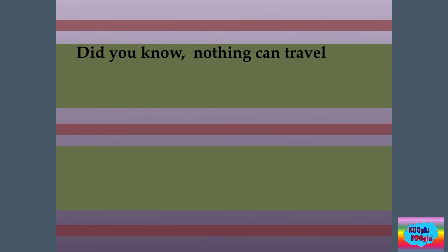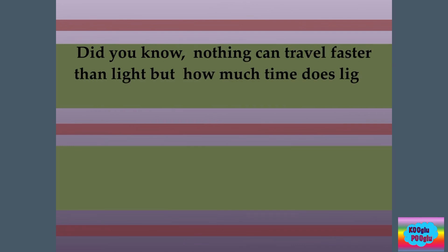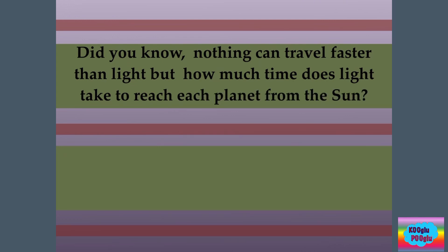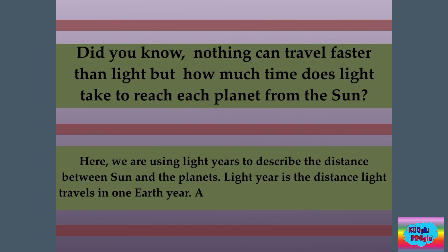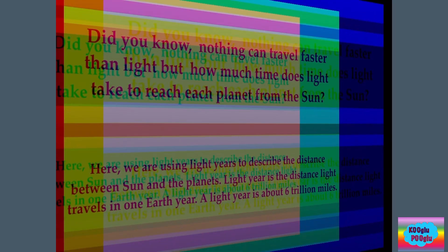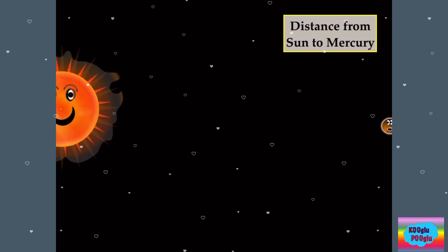Did you know nothing can travel faster than light? But how much time does light take to reach a planet from the sun? Here we are just using light years to describe the distance between the sun and the planets. A light year is the distance light travels in one Earth year — about six trillion miles. Wow!